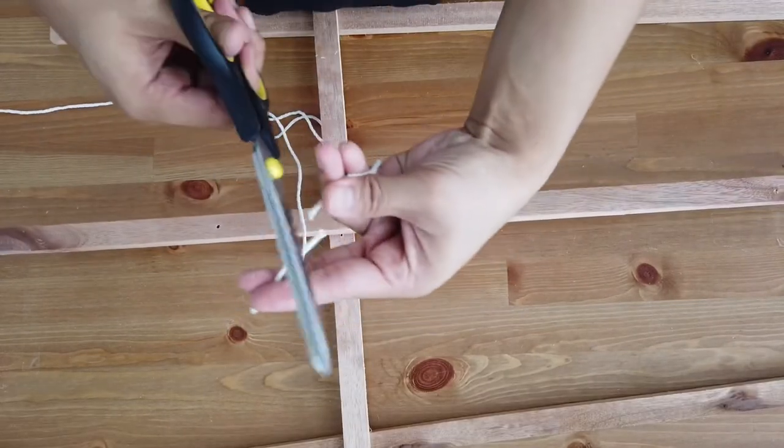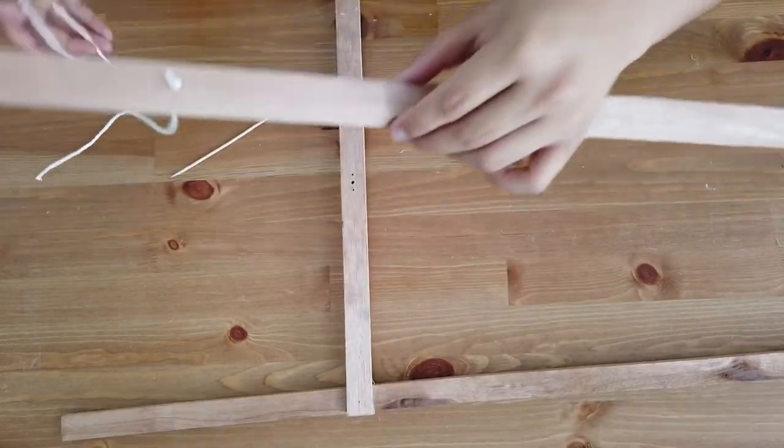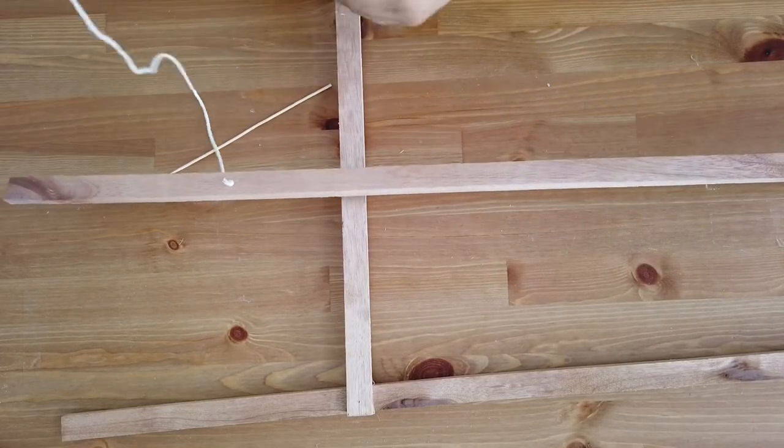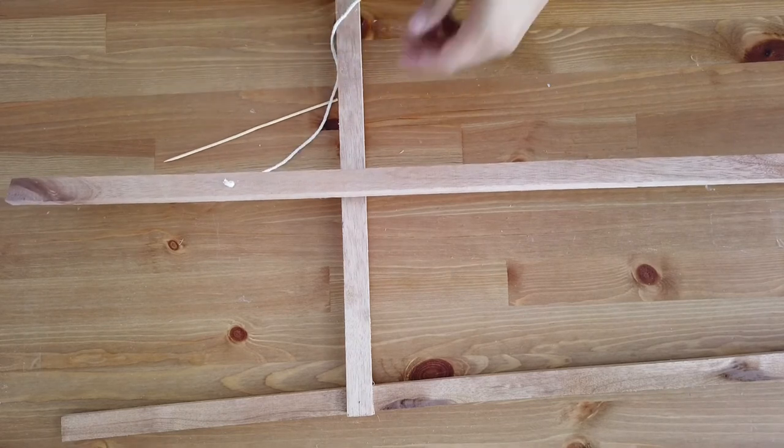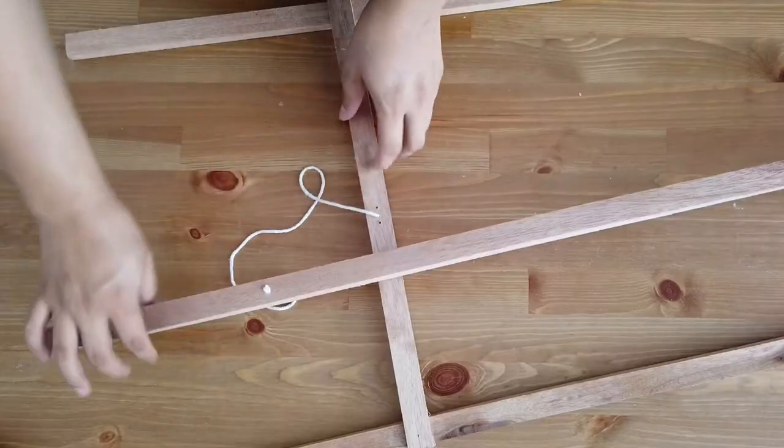So I forgot to mention that I've drilled holes at the stand, at the back stand, and also at the medium-sized wood. And then I'm just gonna tie this yarn together. So this will create the stopper for the easel.